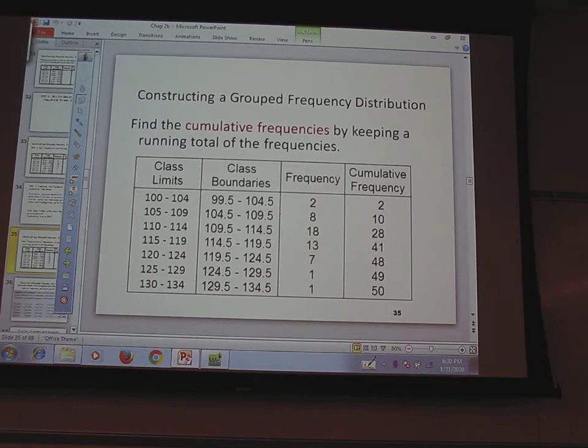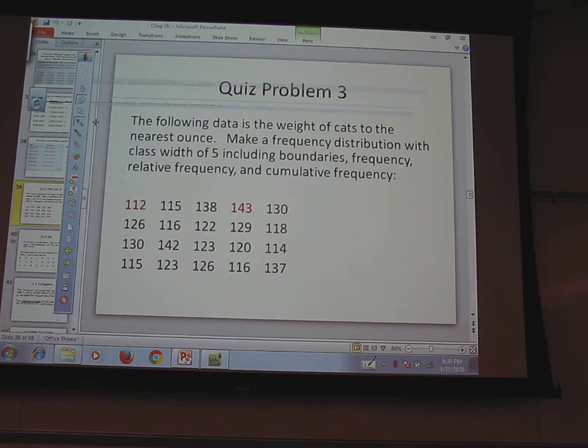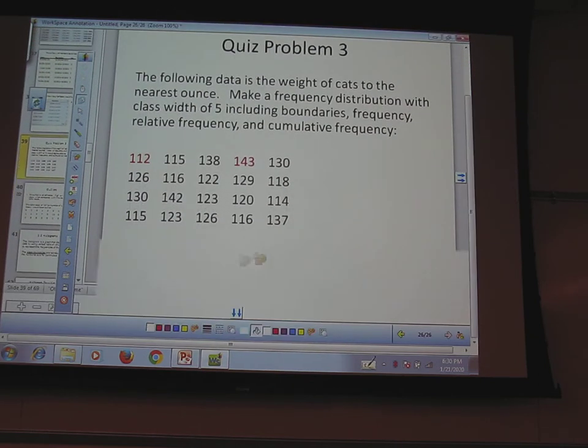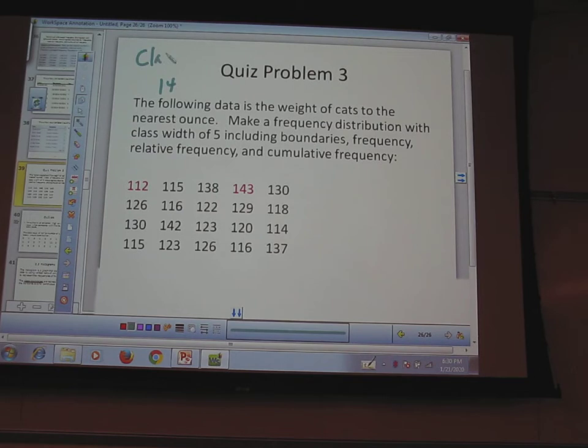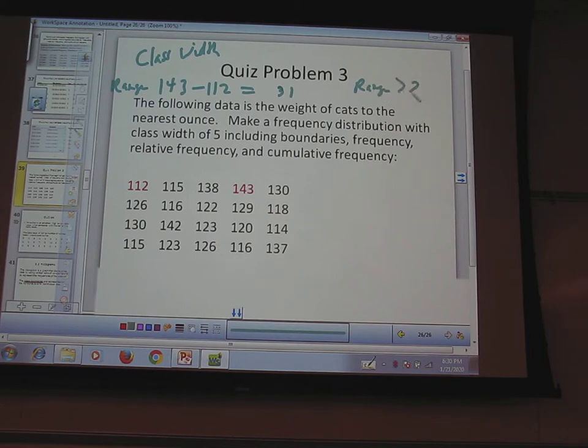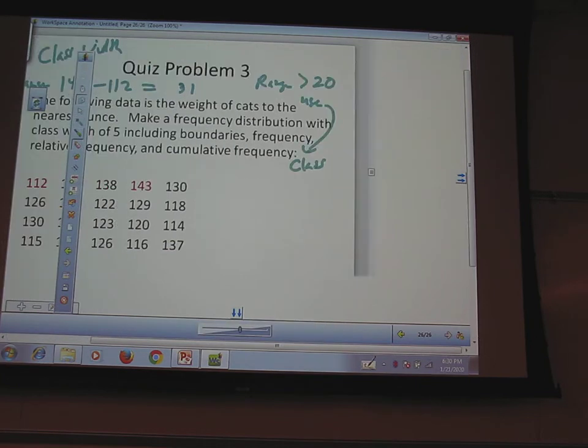Let's go ahead and take a look at problem number three. 143 class width. 143 minus 112, I get what? 31. That's my range. So is my range larger than 20? Yes. So use class width of five. Everybody on board with that part?